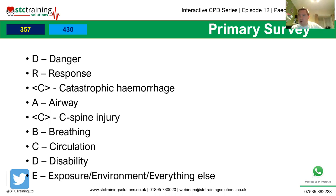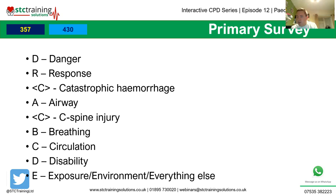Exposure and environment are particularly important with children — they don't regulate body temperature as well as adults and can't tolerate the cold anywhere near as well, especially in the young years and neonates as covered in the obstetric session. There is also much more to consider with children beyond the primary survey — safeguarding being an obvious example — along with social history and other contextual factors.